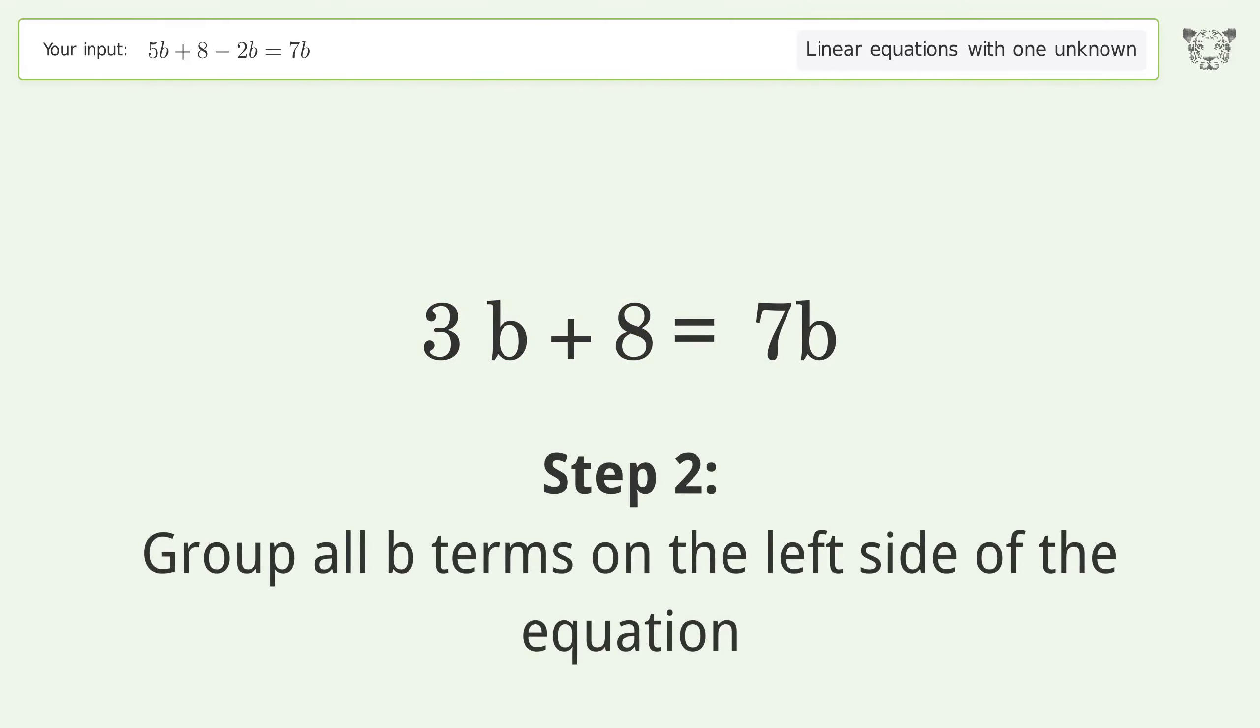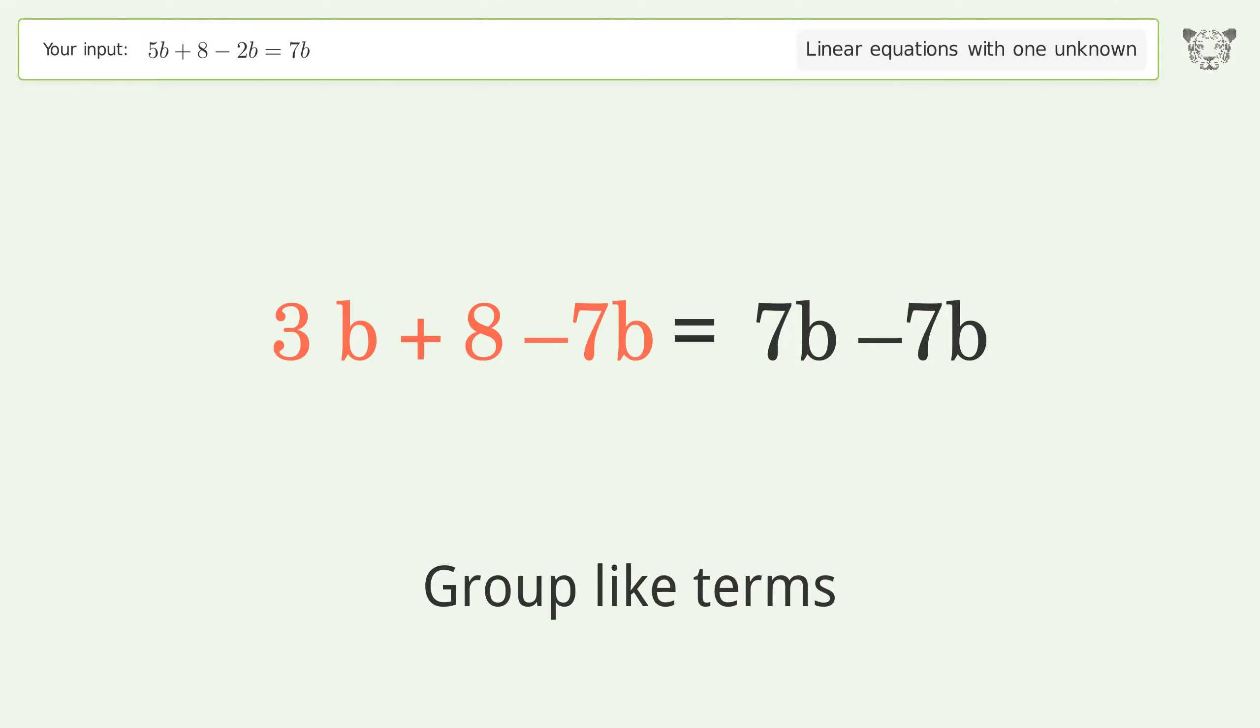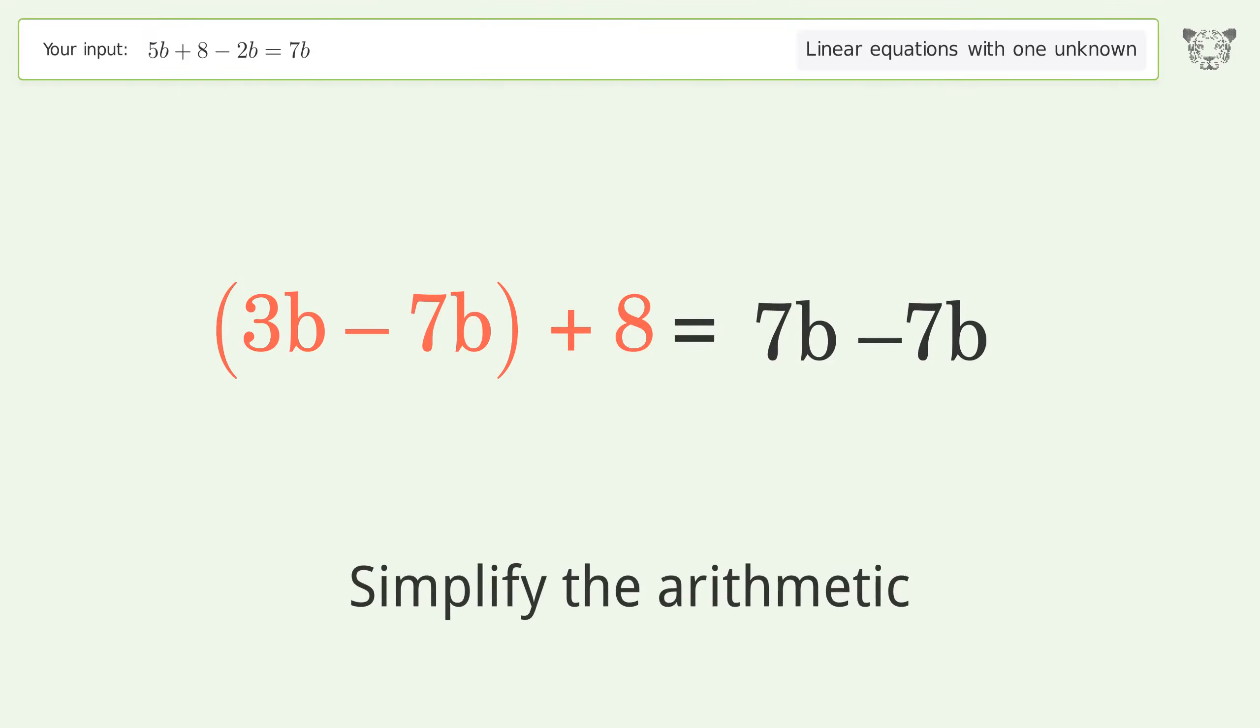Group all b terms on the left side of the equation. Subtract 7b from both sides. Group like terms. Simplify the arithmetic.